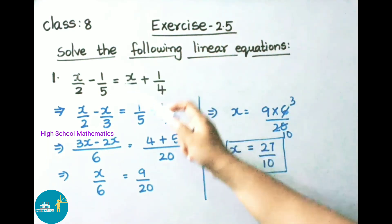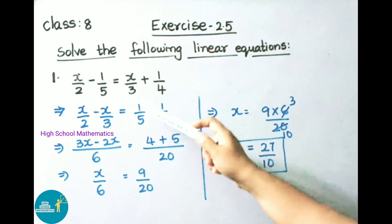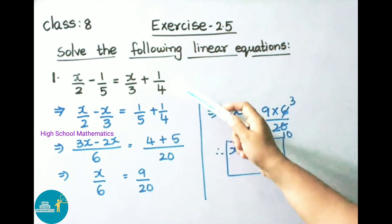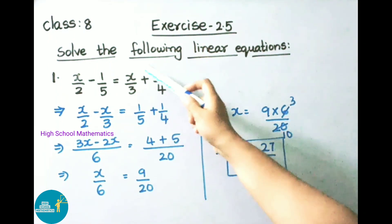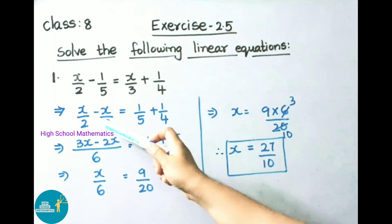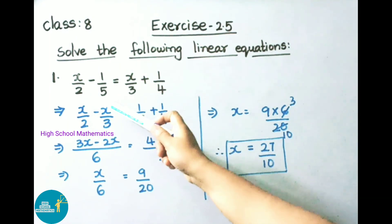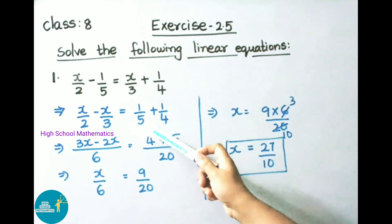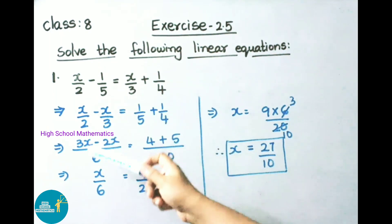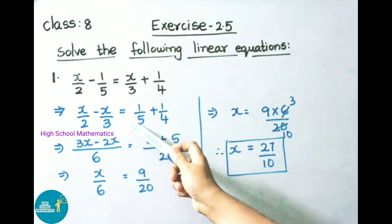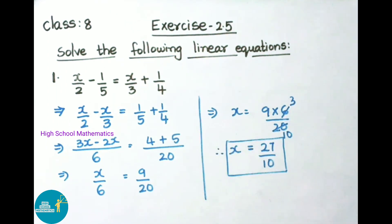First sum: x/2 - 1/5 = x/3 + 1/4. Here, x/3 on transposing becomes -x/3, and -1/5 on transposing becomes +1/5. So that implies x/2 - x/3 = 1/5 + 1/4.